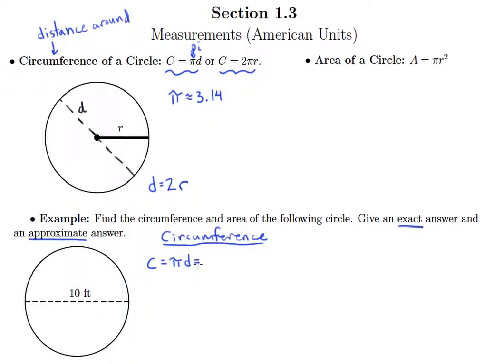So for us that is pi times 10. Now since this is a distance around a circle, that's going to be measured in feet.